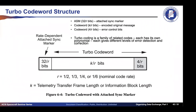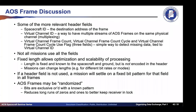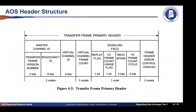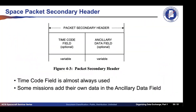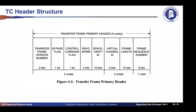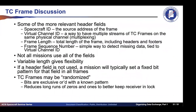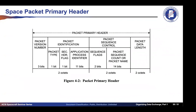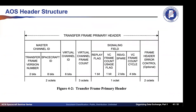A question was raised: in the TC frame header the spacecraft ID was 10 bits, but in the AOS header it appears to be 8 bits — why the difference? The presenter acknowledged this was a good observation and that he had not noticed the discrepancy before, and would need to look it up. This will be saved for part two.